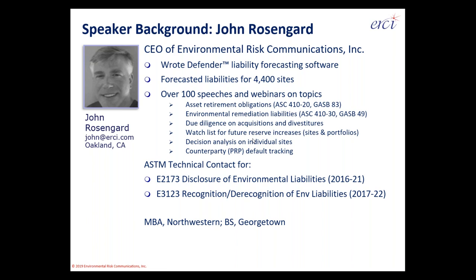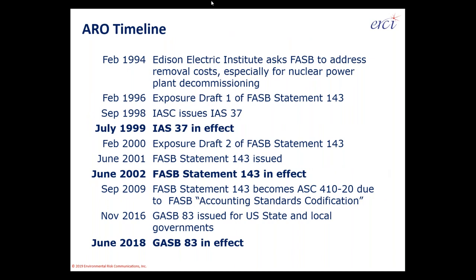Let me move on to the content of today's presentation, which is to cover where asset retirement obligations came from — I'll also be referring to them as AROs today. Back in 1994, the Edison Electric Institute, a trade association of utility companies in the US, asked FASB, the Financial Accounting Standards Board, which is funded by the SEC, to address a pressing need about how to account for long-term removal costs of major assets, specifically nuclear power plant decommissioning costs. Two years later, exposure draft one was issued for Statement 143, the first document that codified what an asset retirement obligation is.